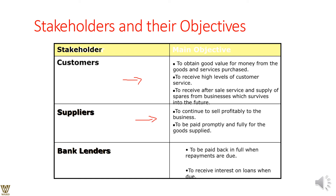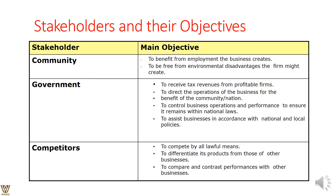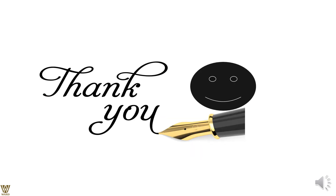Bank lenders need full repayment of loans plus interest. The community benefits from the business, and the government earns tax revenue, maintains quality living standards, enacts laws, and ensures they are implemented. Competitors aim to compete lawfully, differentiate products, and deliver better experiences for end customers. With this, we come to the end of the presentation — thank you for watching.